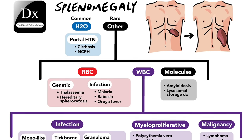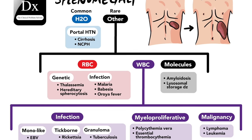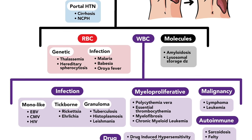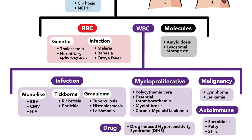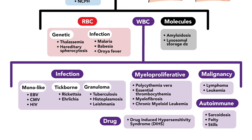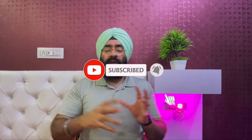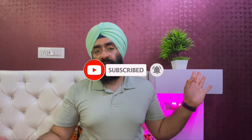Liver disease, blood disease, cancers, and lymph node problems can all cause splenomegaly. In rare cases, if there is trauma — such as a punch — the spleen can rupture. Since the spleen is filled with blood, a ruptured spleen causes internal bleeding.